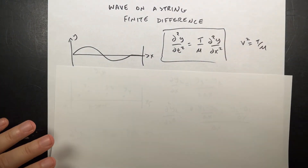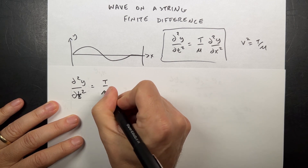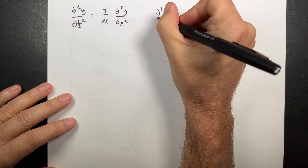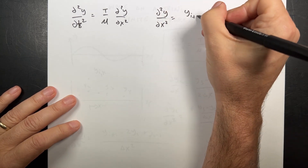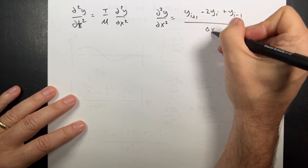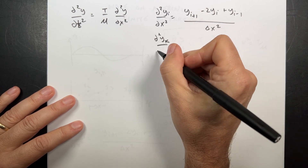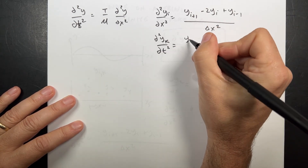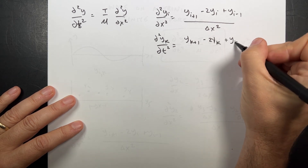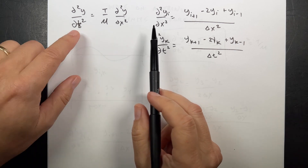That means I can do the same thing for the second derivative in time. Let me rewrite the wave equation: the second partial of y with respect to time equals T over mu times the second partial of y with respect to x. The second partial with respect to x is yi+1 minus 2yi plus yi-1 over delta x squared. And the second partial with respect to t is yk+1 minus 2yk plus yk-1 over delta t squared.